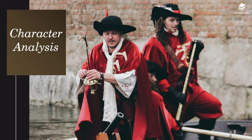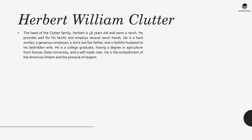Let's study the characters. Herbert William Clutter is the head of the Clutter family — 48 years old and the owner of a ranch. He provides well for his family and employs several ranch hands. He is a hard worker, a generous employer, a strict but fair father, and a faithful husband to his bedridden wife. He is a college graduate with a degree in agriculture from Kansas State University, a self-made man, the embodiment of the American dream, and the pinnacle of respect.